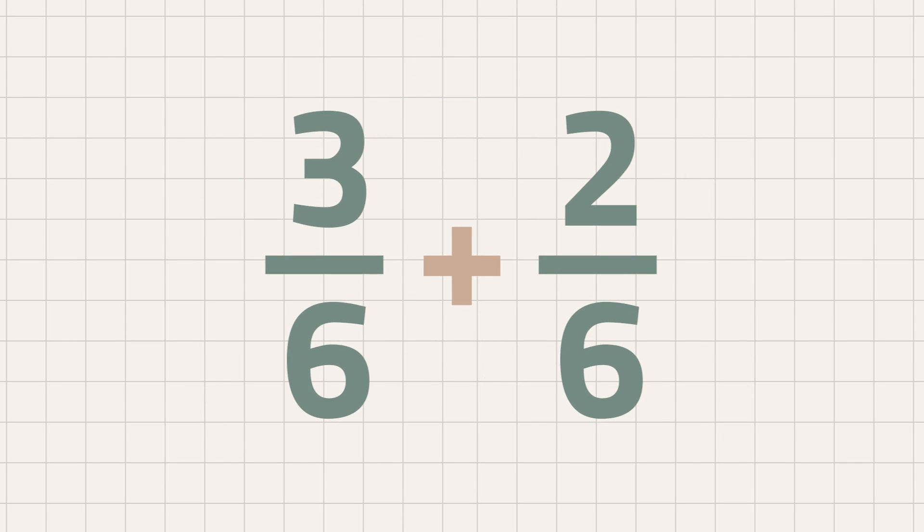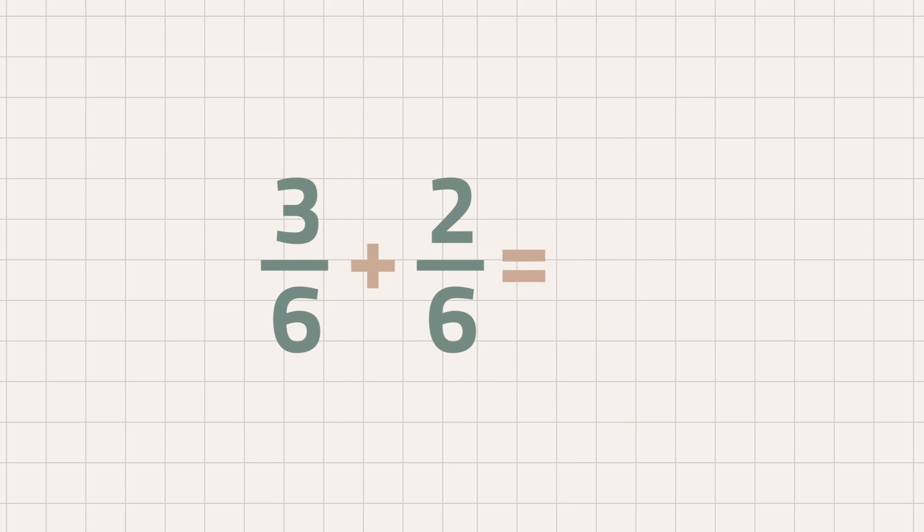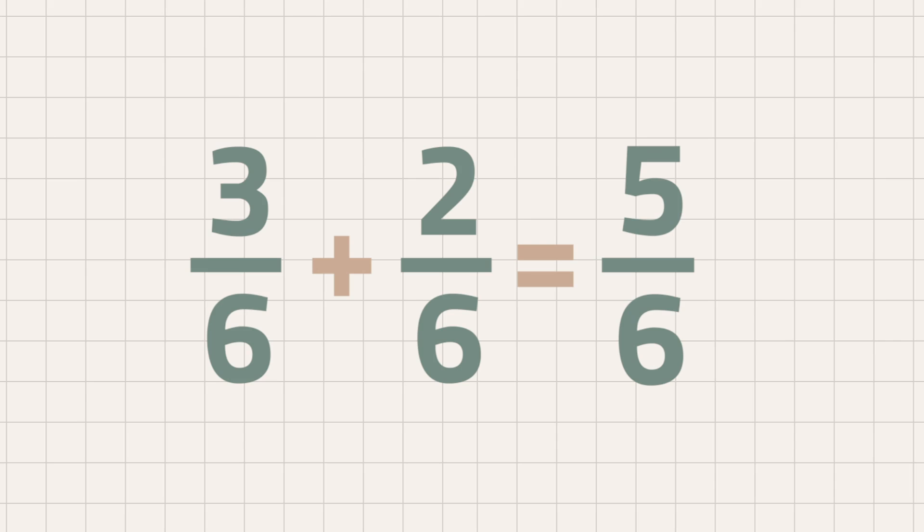Since we have the same denominator, we can now add the numerators first. Three plus two is equal to five. Then, copy the denominator, which is six. We get the sum five-sixths.